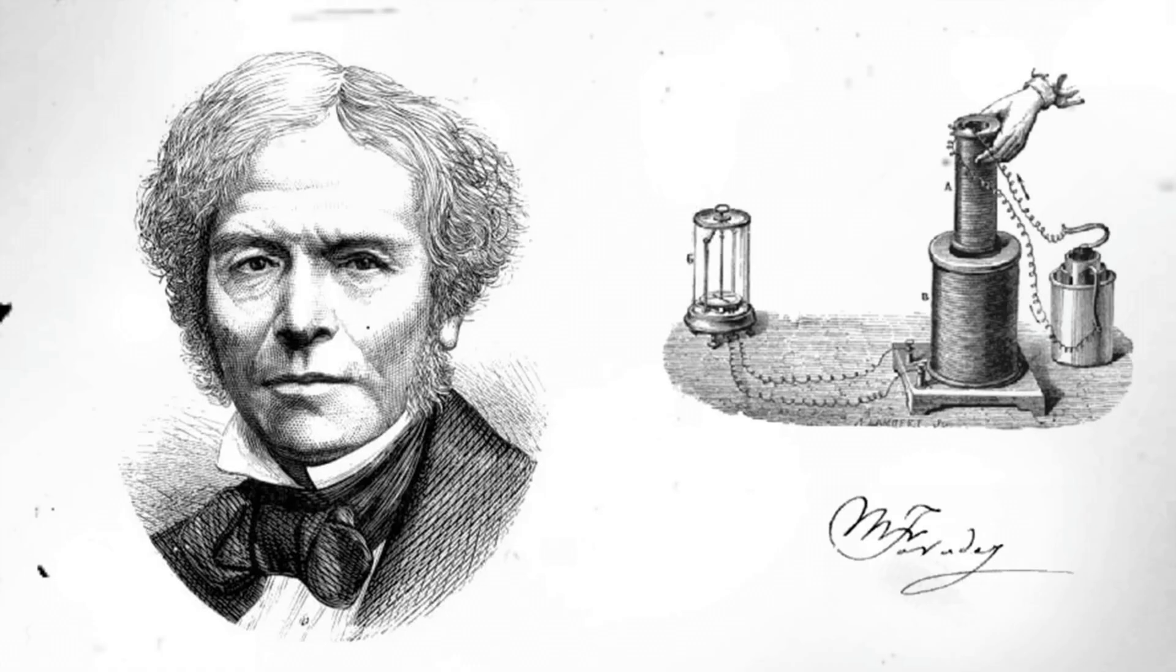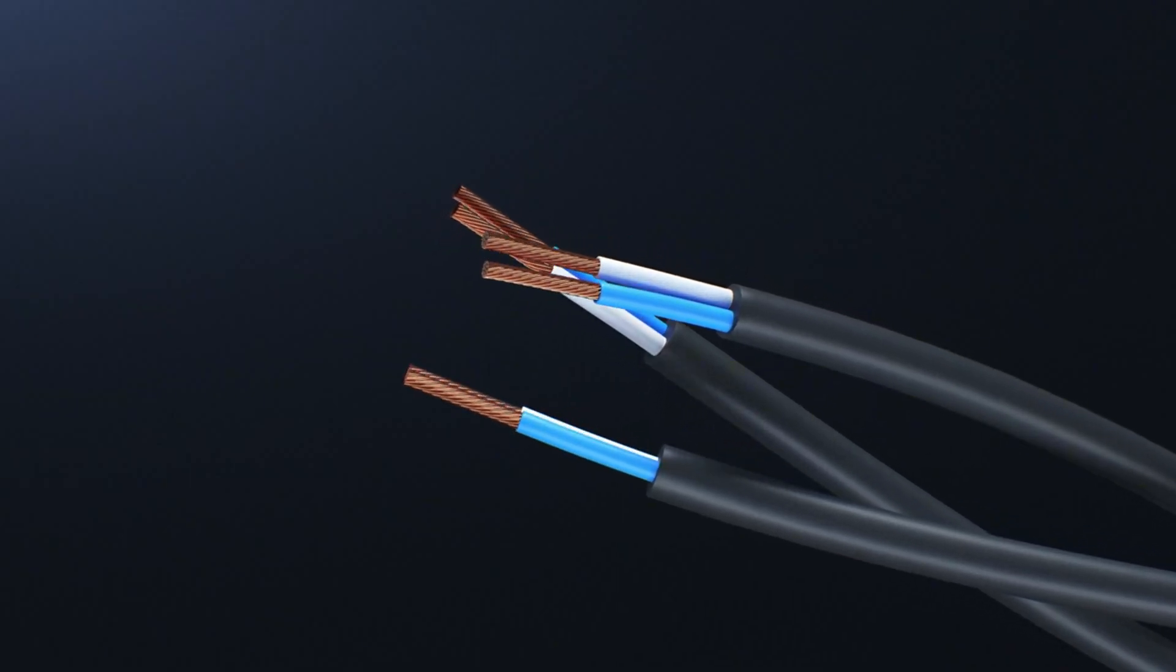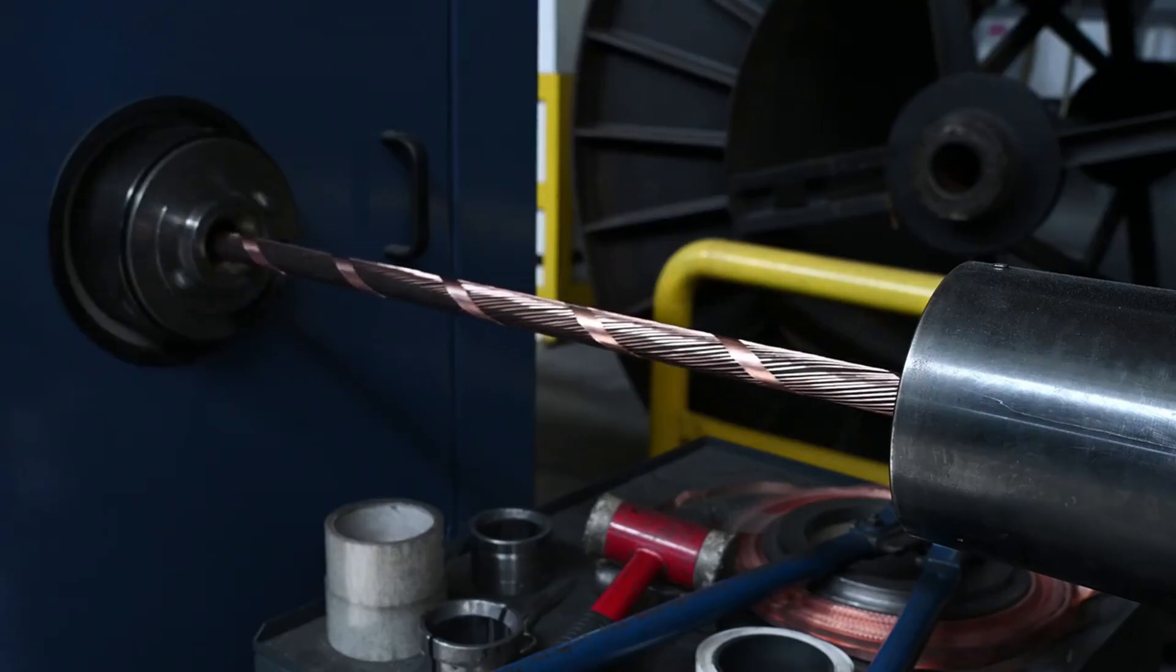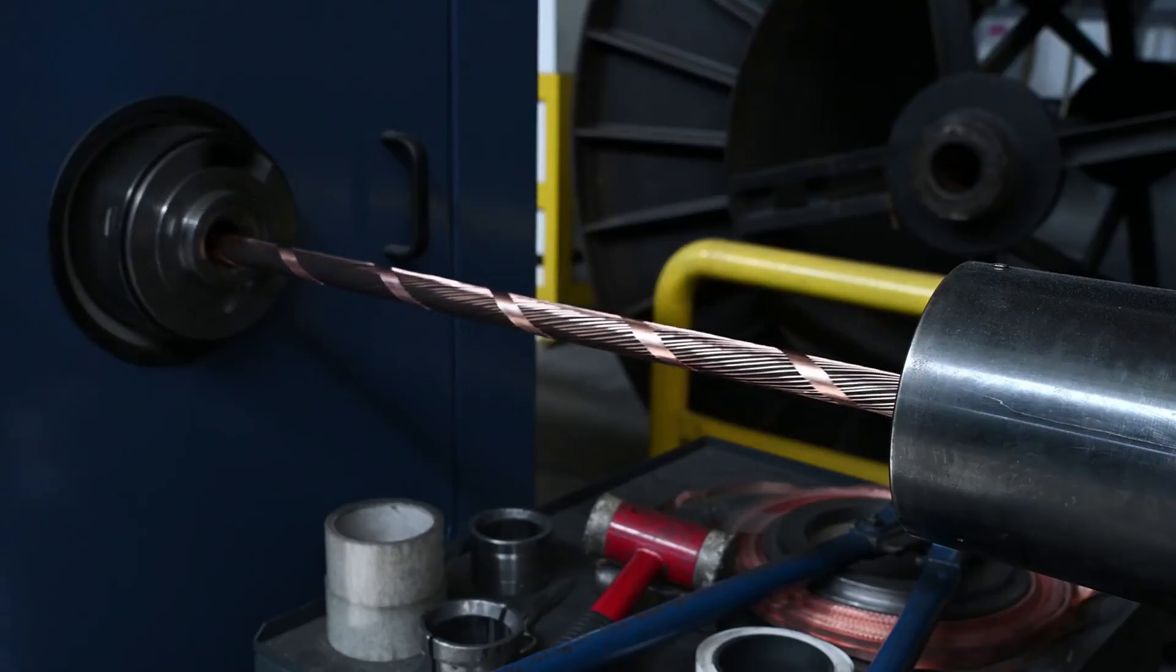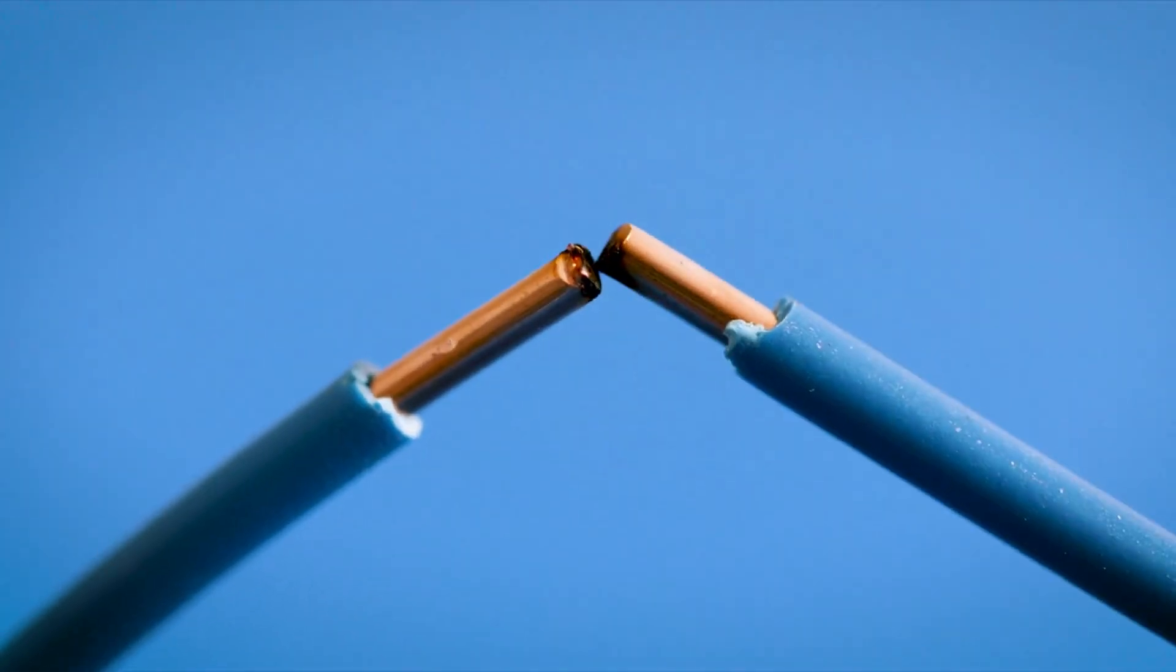Michael Faraday's 1830s experiments were pioneering, but they used solid conductors, exactly the geometry that produces no current in this scenario. His conclusion was correct for that case, but it missed the possibility that a hollow conductor could behave differently.